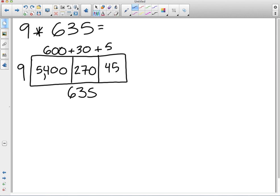And then we add 5,400 plus 270 plus 45. Fantastic. We're going to take these partial products, 5,400, 270, and 45. Being very careful about place value, noticing that our digits in the ones place, tens place, hundreds, and thousands are lining up neatly.